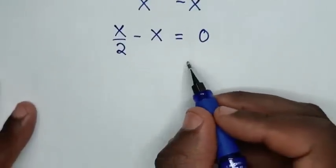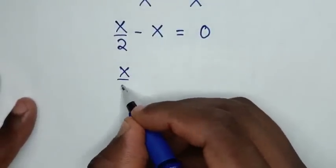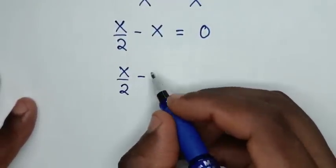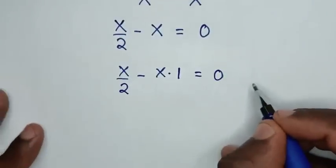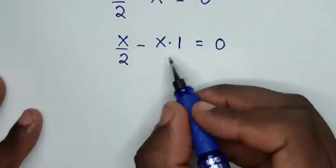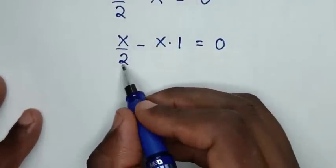Our equation is x over 2 minus x, which is the same as x times 1, equals 0. To have the same denominator of 2,